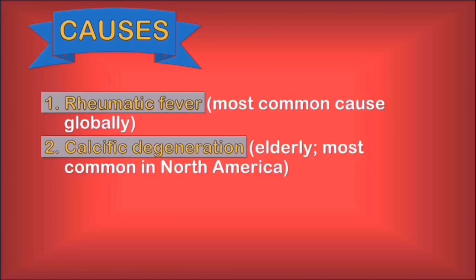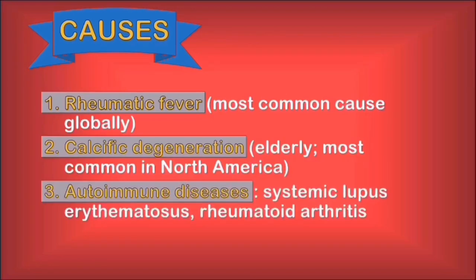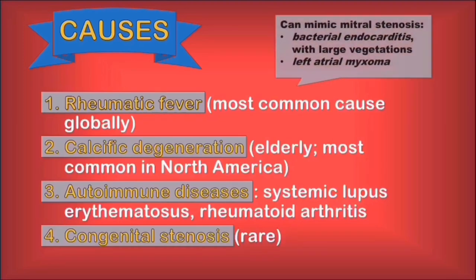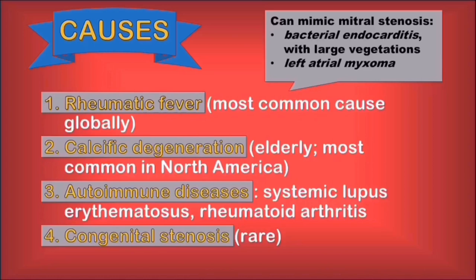Finally, some autoimmune diseases such as lupus or rheumatoid arthritis, alongside the rare possibility of a congenital stenosis, are also causes of mitral stenosis. A mention needs to be made here: some pathologies, like bacterial endocarditis with large vegetations on the valve, or left atrial myxomas — a type of cardiac tumor — can cause a deficient flow through the mitral valve and can thus mimic a mitral stenosis.